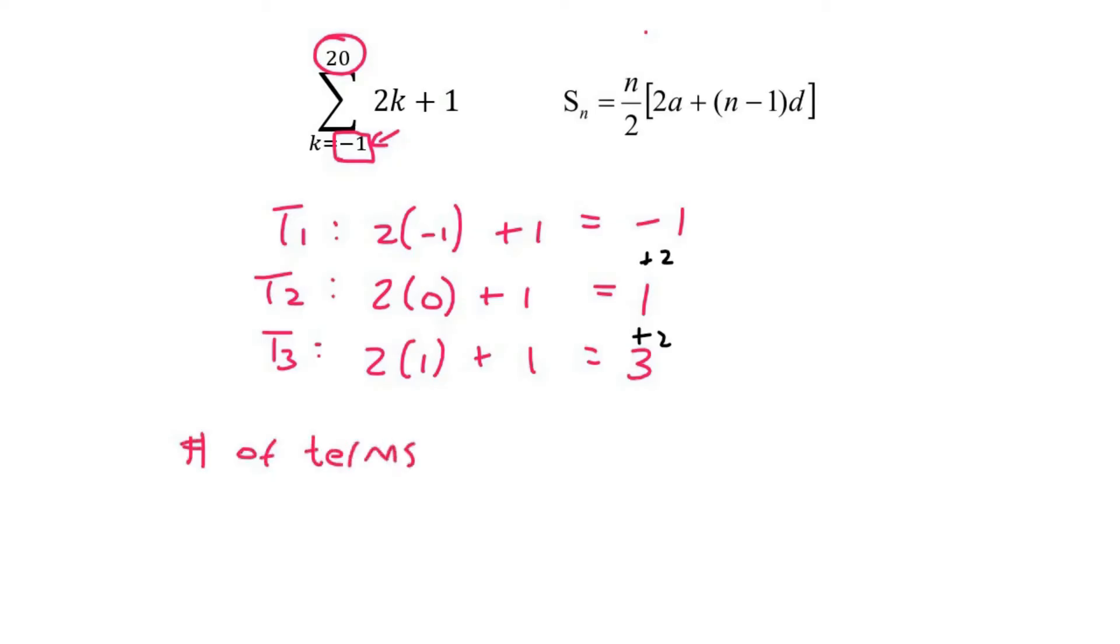So the number of terms is 20 minus negative one plus one, and so that actually becomes 22. There are 22 terms.